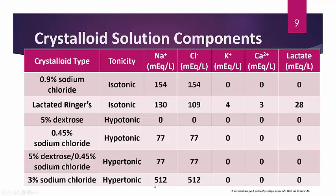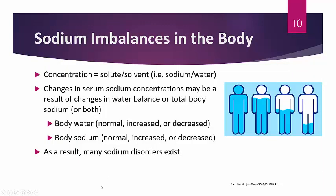Now that we know the basics of available fluids, let's discuss sodium imbalances in the body. When you see a sodium level on a BMP (basic metabolic panel) — which includes sodium, potassium, chloride, bicarb, BUN, serum creatinine, and glucose — remember these are all concentrations.